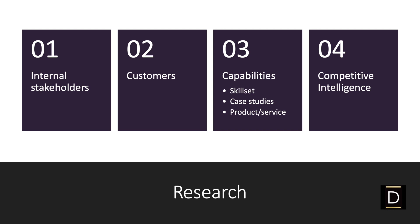Next, look into the capabilities that your company has. There are three areas to look into. Number one: look at the skills distributed across your company in various departments, because these skills are helping you to deliver value to your prospects. You could take the help of your talent managers, department heads, or team managers, depending on how you are organized.